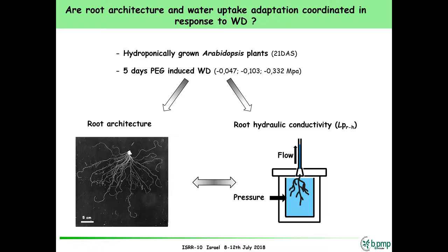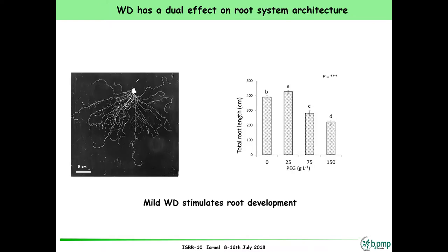We apply water stress for five days, and the water deficit is induced by PEG treatment — polyethylene glycol — to modify water availability for the plant. On these plants, we analyze the root system architecture, and we measure the water transport capacity of the root system using a pressure chamber system.